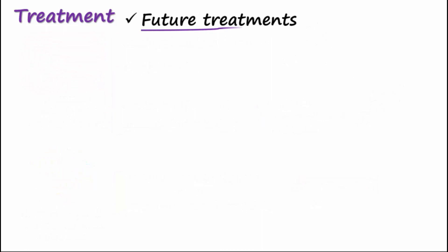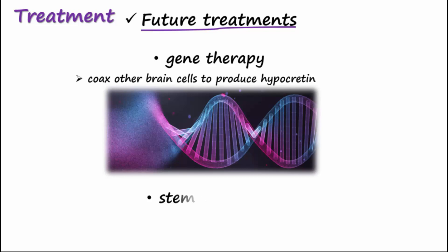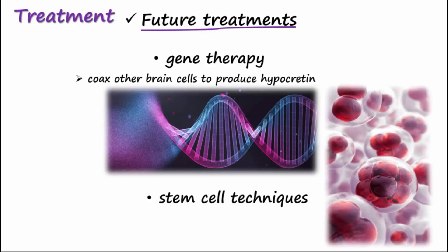Future treatments include gene therapy, which attempts to coax other brain cells to produce hypocretin, and stem cell techniques, which would reintroduce new hypocretin-producing cells. Both techniques would help restore hypocretins in the brain.